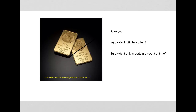Now in the next step we take one of these bars and again cut it in half, so we now have a quarter of the original gold bar. Now we take this quarter and cut it again in half — now we've got an eighth of the original gold bar. And we can do that several times.